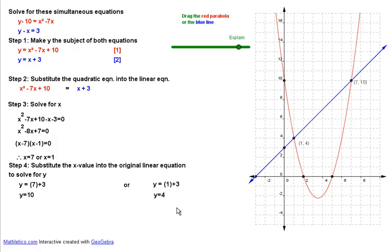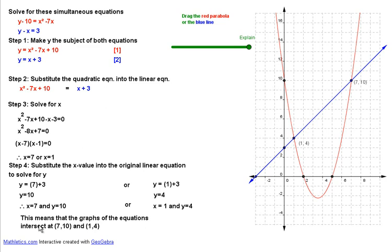So y equals 10 and y equals 4, especially not when the computer's doing the maths. x equals 7 and y equals 10, that's that point there, or x equals 1 and y equals 4, that point there. Writing it in a sentence, this means that the graphs of the equations intersect at (7, 10) and (1, 4), as you can see here.